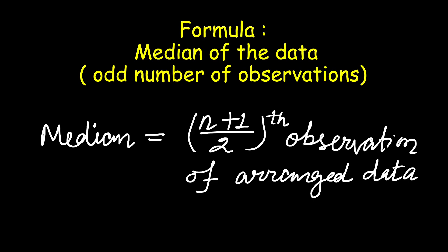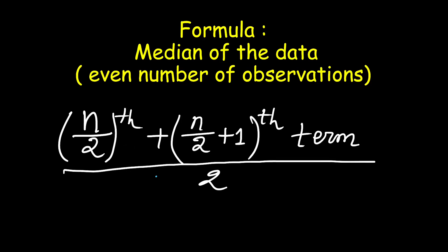That was for odd number of observations. When there are even number of observations, there are 2 middle values. But we have to choose only 1, so the median is the mean of both the middle values. The formula uses the n/2-th observation and the next observation, and we find their mean value.